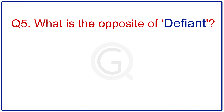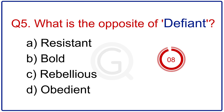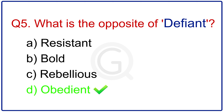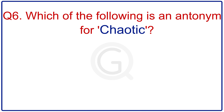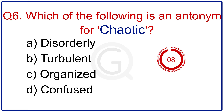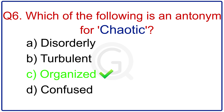What is the opposite of defiant? The right answer is obedient. Which of the following is an antonym for chaotic? The correct answer is organized.